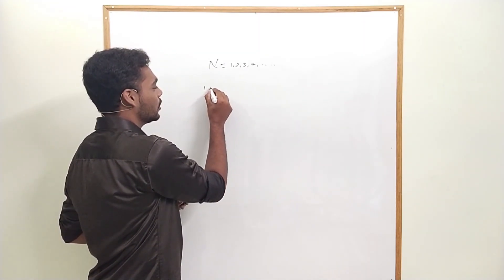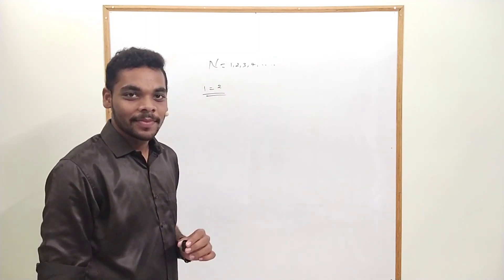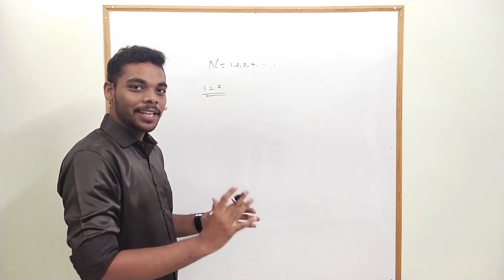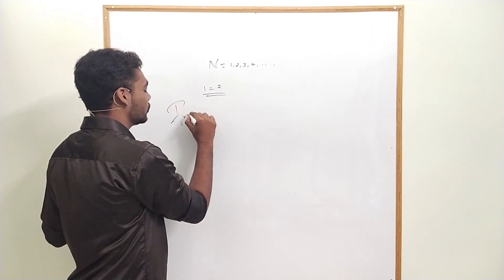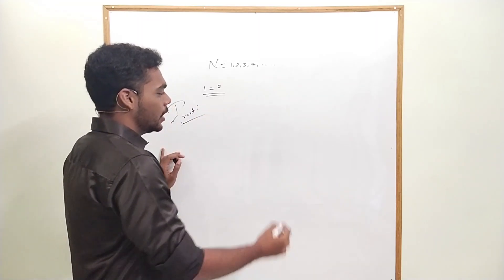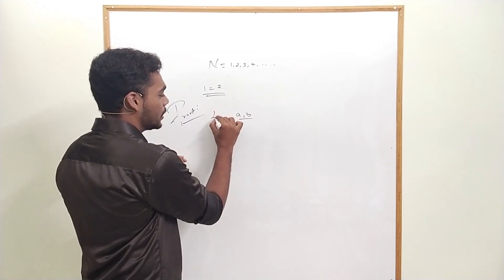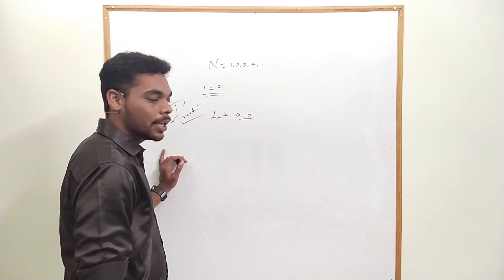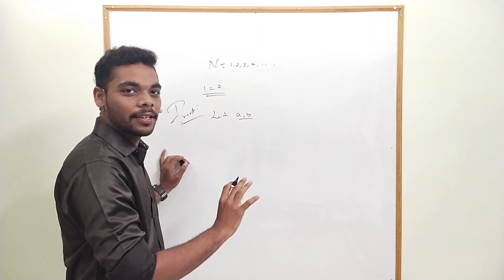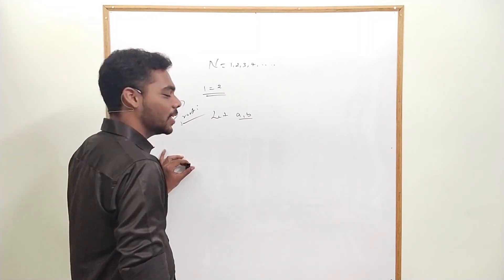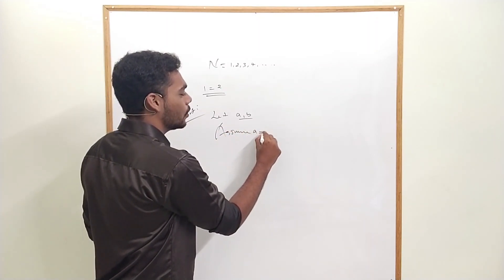We are going to prove that the first number one is equal to the second number two. Is it interesting? Just for fun — we will prove it. Proof: let A and B be two numbers. We can assume: assume A equals B.